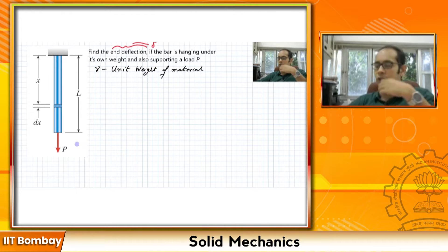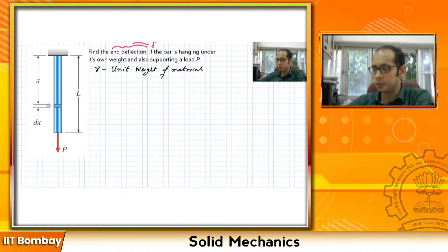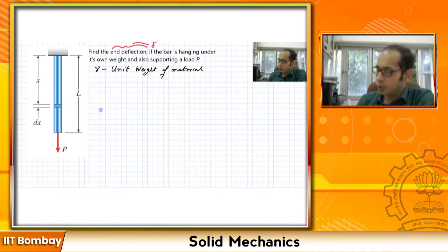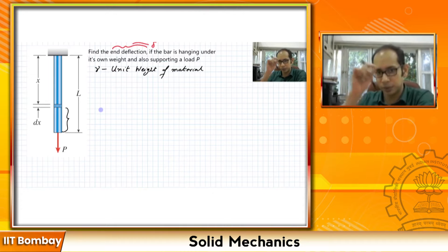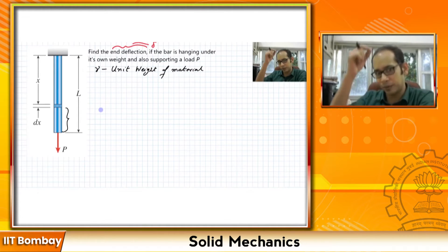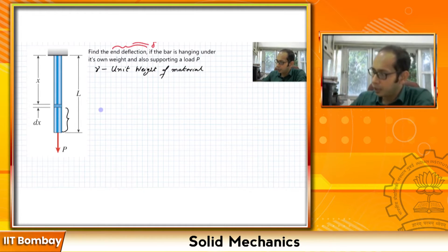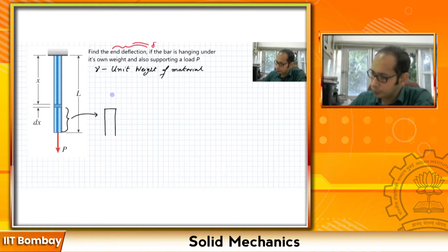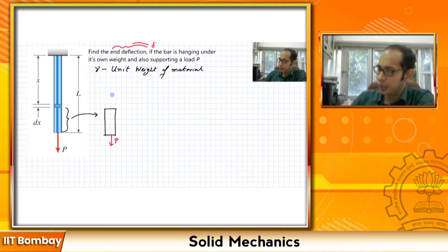So how do we do this? We have this load which is percolating from the top all the way to the bottom. Suppose at a distance x we take a section, or an infinitesimally small element dx. If I write the equilibrium equation for just this particular part to calculate the internal forces — remember, we have to calculate the internal forces at every step because it is not just the end load P; you also have the self-weight of the material.